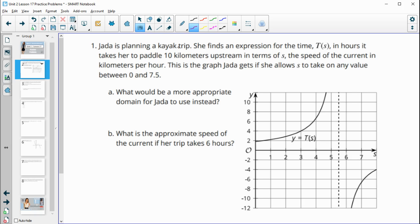Number one says that Jada is planning a kayak trip. She finds an expression for time in hours that it takes her to paddle 10 kilometers upstream in terms of S, which is the speed of the current in kilometers per hour. So this is the graph that Jada gets if she allows S to take on any value between 0 and 7.5. So we're looking at as we get closer and closer to this vertical asymptote.